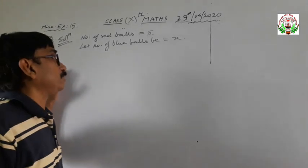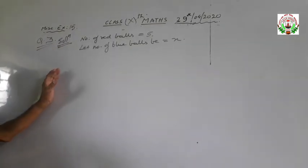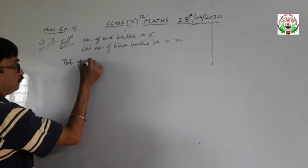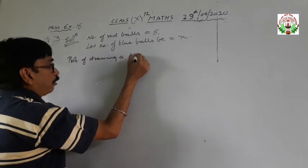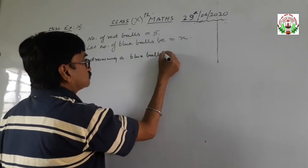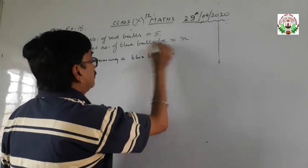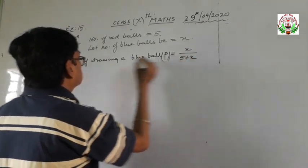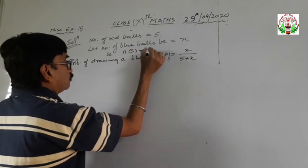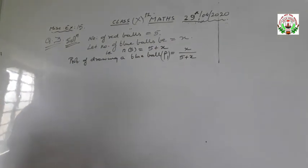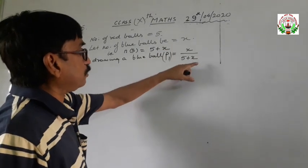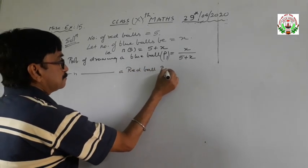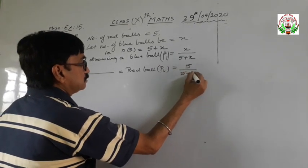The question states that the probability of drawing a blue ball is double that of the probability of drawing a red ball. So we calculate: probability of drawing a blue ball P1 equals X upon 5 plus X, since there are X blue balls and a total of 5 plus X balls. Probability of drawing a red ball P2 equals 5 upon 5 plus X.